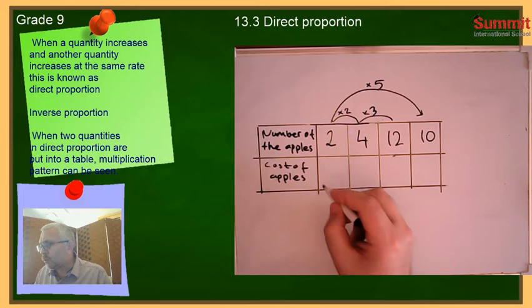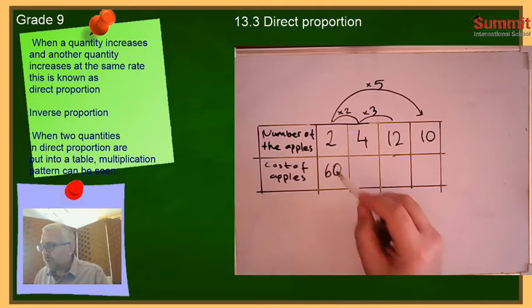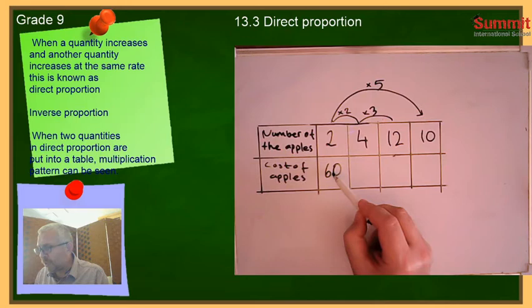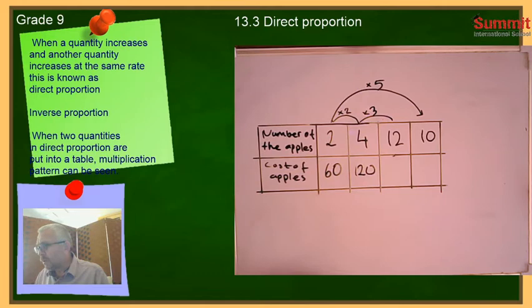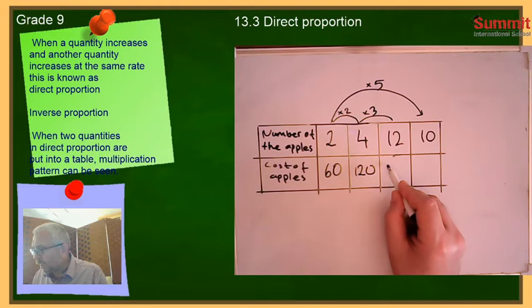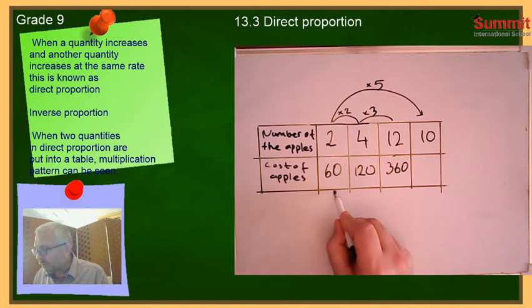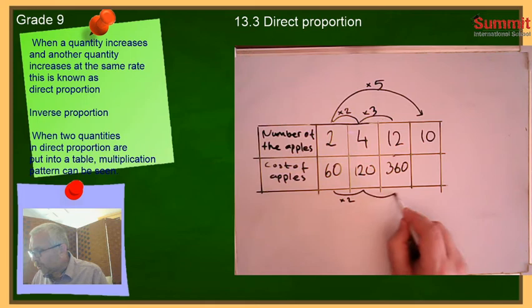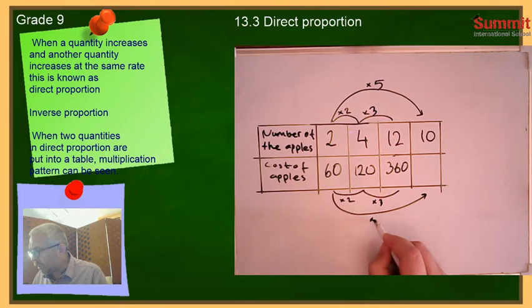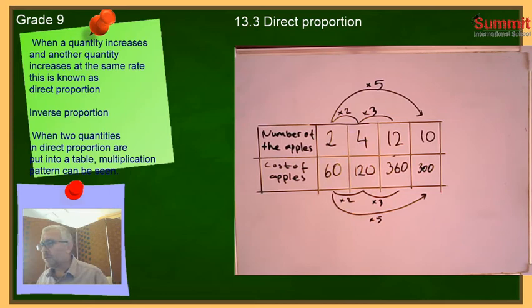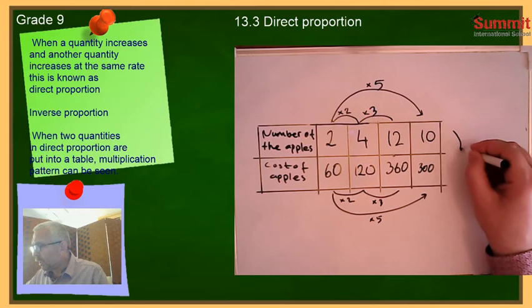For two apples, the cost is 60 cents. Multiplying by two gives 120 cents. Multiplying by three gives 360 cents. Multiplying by five gives 300 cents. So we can see this as a multiplication table — each number of apples multiplied by 30 gives the cost.